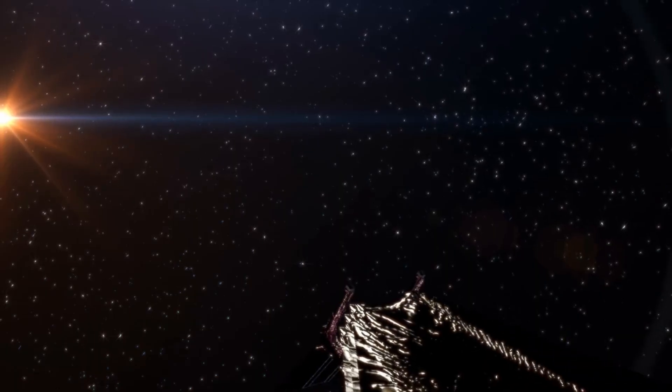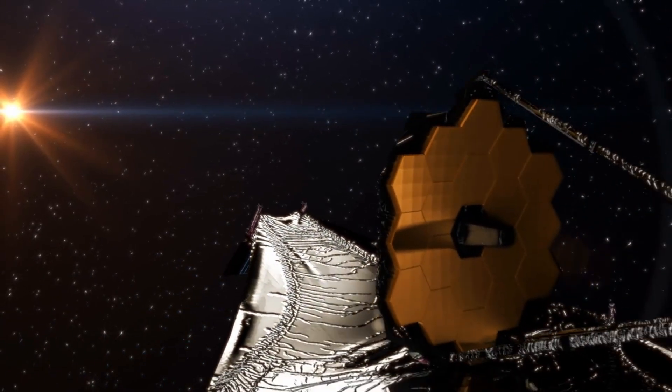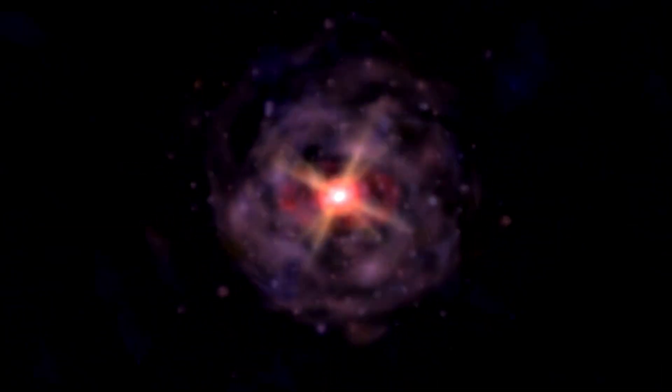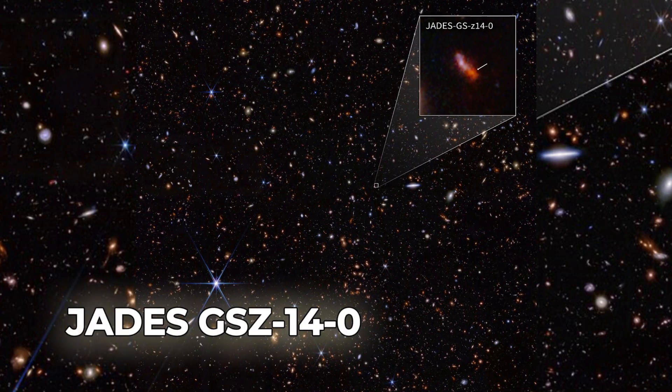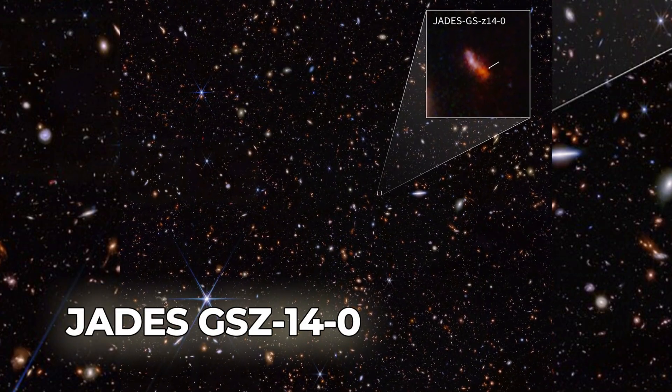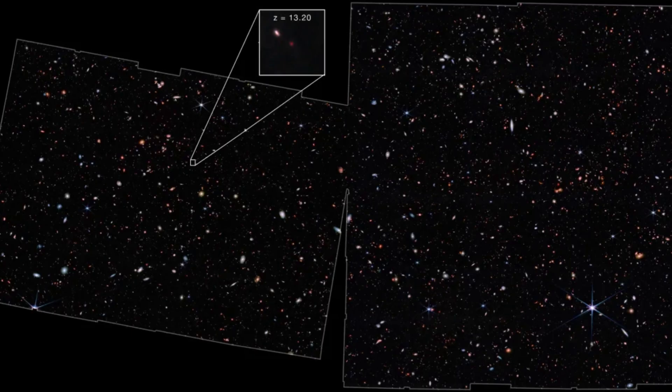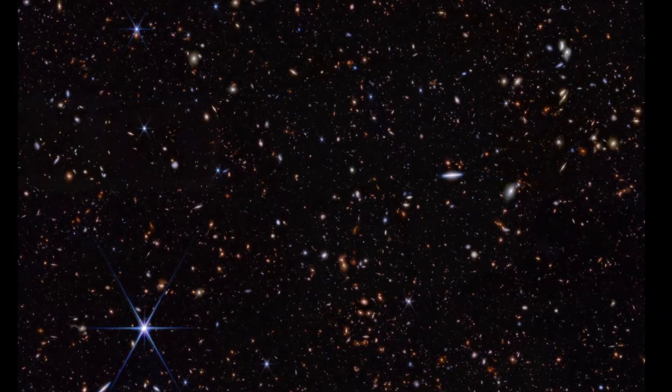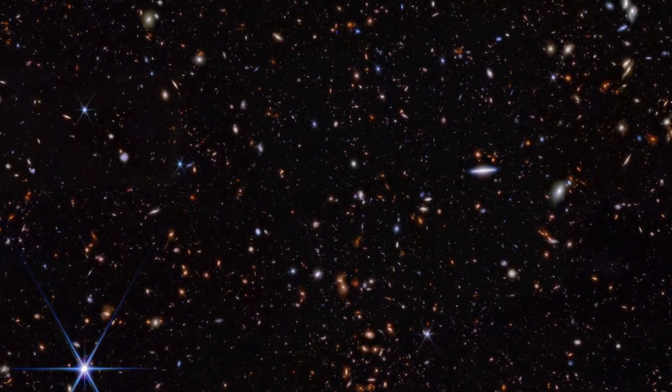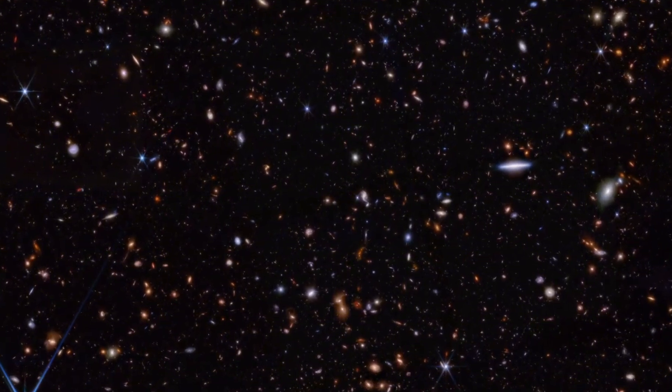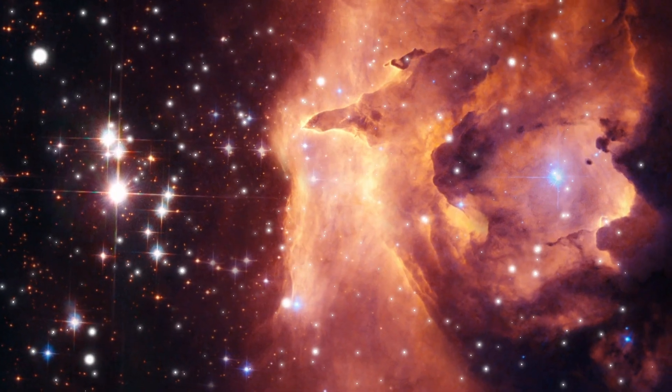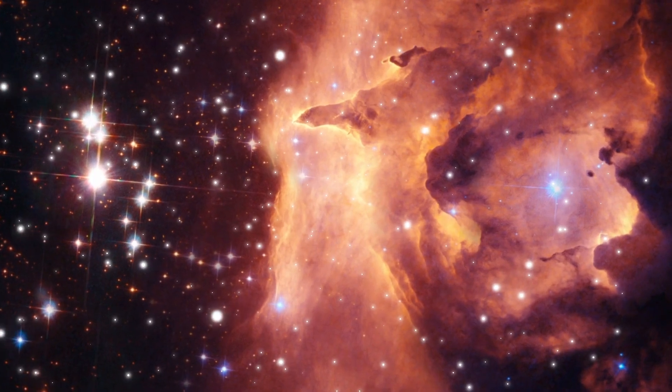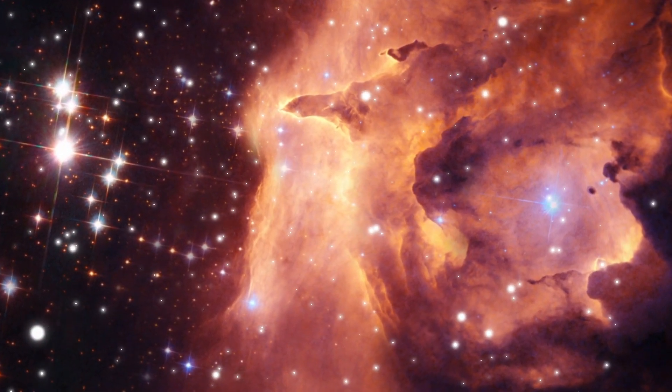Recently, the James Webb Space Telescope has surpassed its own achievement by spotting the most distant known galaxy yet, named JADES-GS-z14-0. This ancient galaxy breaks the previous record set by another galaxy discovered last year, called JADES-GS-z13-0, dating back around 330 million years after the universe's birth. The JADES in the name stands for JWST Advanced Deep Extragalactic Survey. It's part of a series of observation programs using the telescope to explore the first few hundred million years of the cosmos.